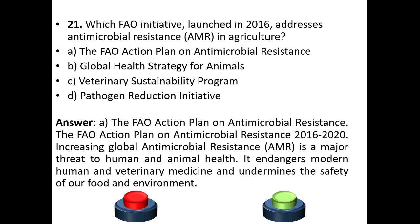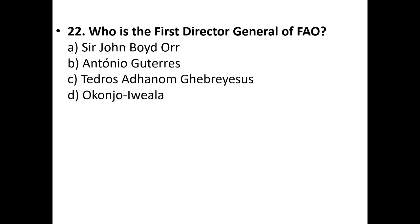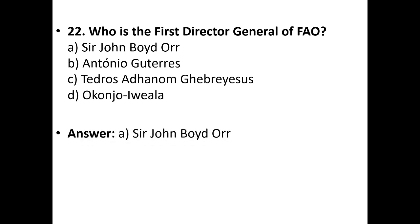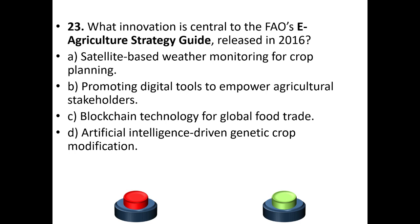Question 22: Who is the first Director General of FAO? Options: a) Sir John Boyd Orr, b) Antonio Guterres, c) Red Rose Athanum, or d) Ocanjo Avella. The answer is option A — Sir John Boyd Orr.